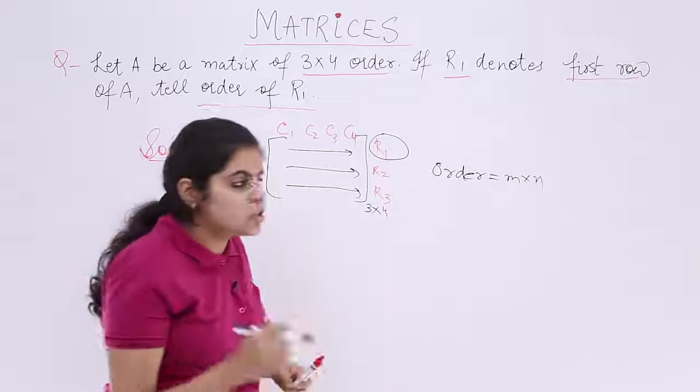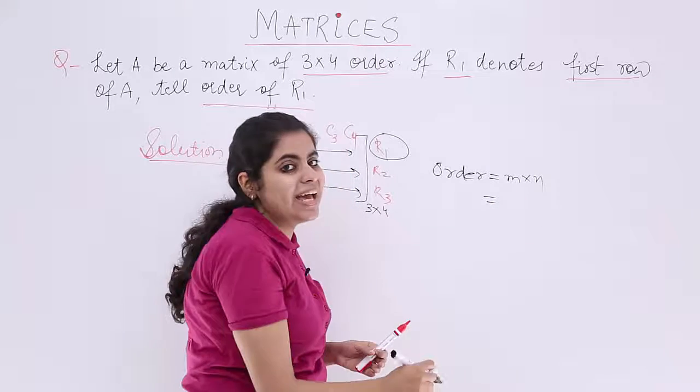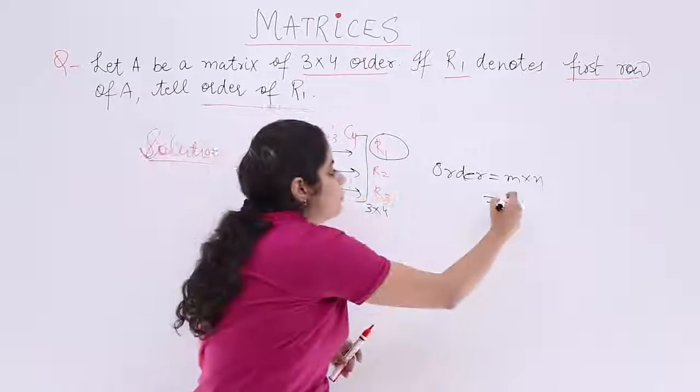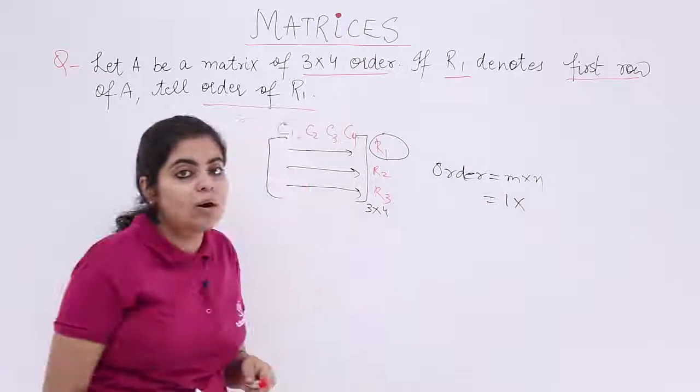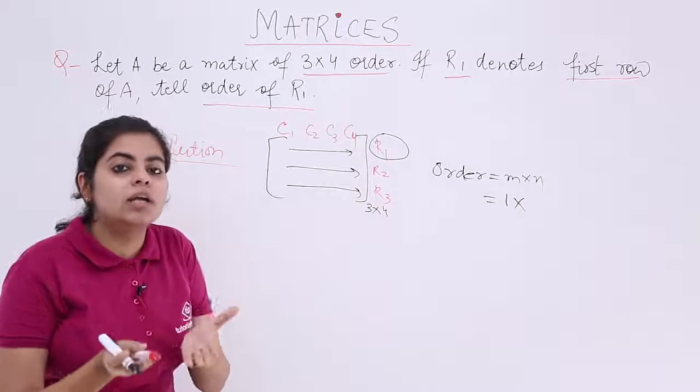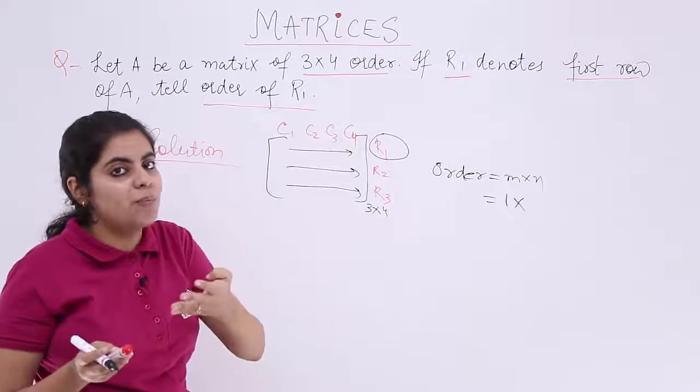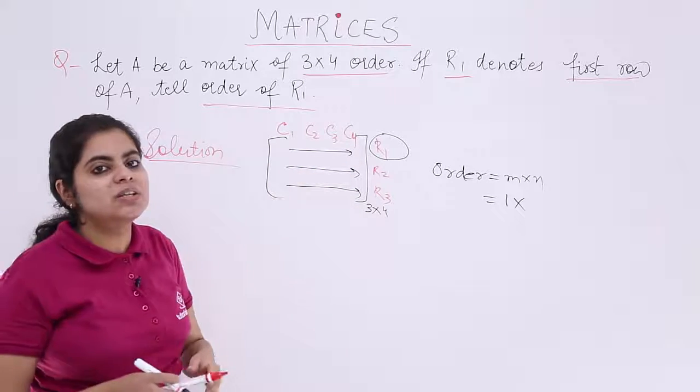First row. First row means what is M? M is row number. What is row number? Row number is 1. And what about N? N is the order related to the columns. So, what about the columns? How many columns? 4 columns in all.